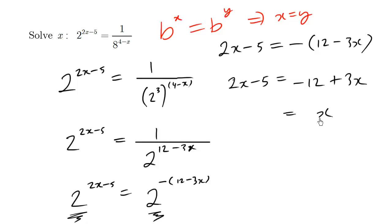We have 3x minus 2x is x equals 7. Negative 5 plus 12 is 7. So the final answer is x equals 7.